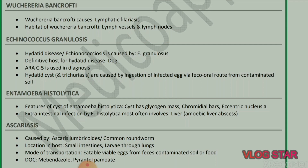Next parasite is Wuchereria bancrofti. Wuchereria bancrofti causes lymphatic filariasis. Habitat of Wuchereria bancrofti is lymph vessels and lymph nodes. Next parasite: Echinococcus granulosus.